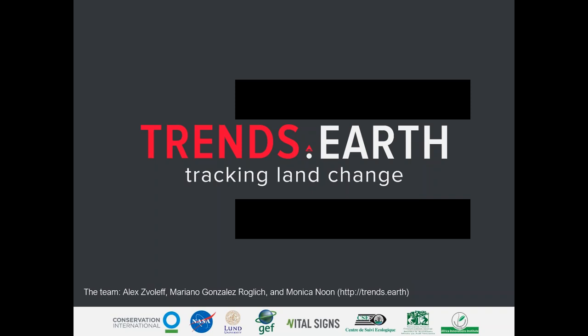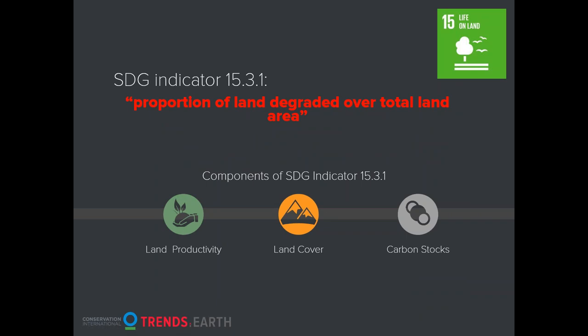In this brief presentation, I want to give you an overview of the project, how the tool works, and how we're planning to move forward. The tool is framed around reporting to SDG 15.3.1, the Sustainable Development Goal 15.3.1, which requires countries to do assessments on changes in land productivity, land cover, and carbon stocks to assess the proportion of land degraded over total land areas.